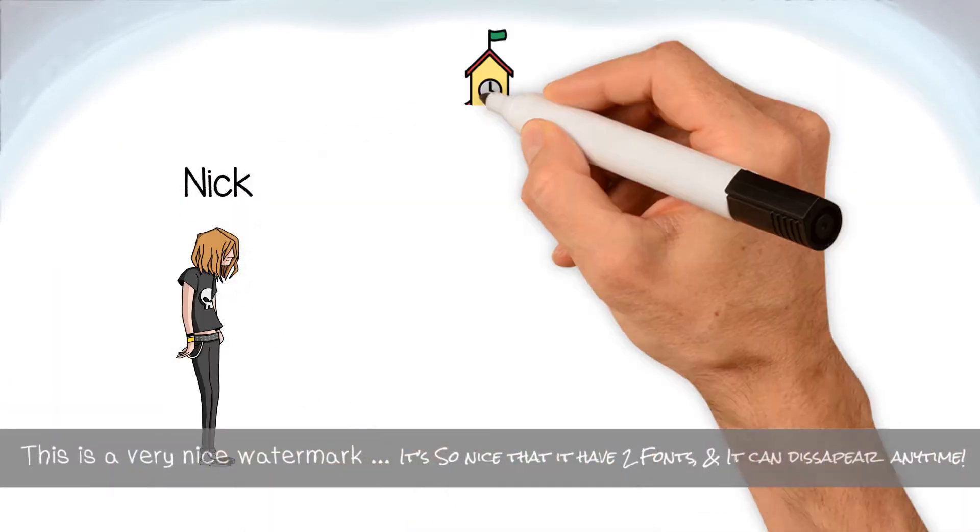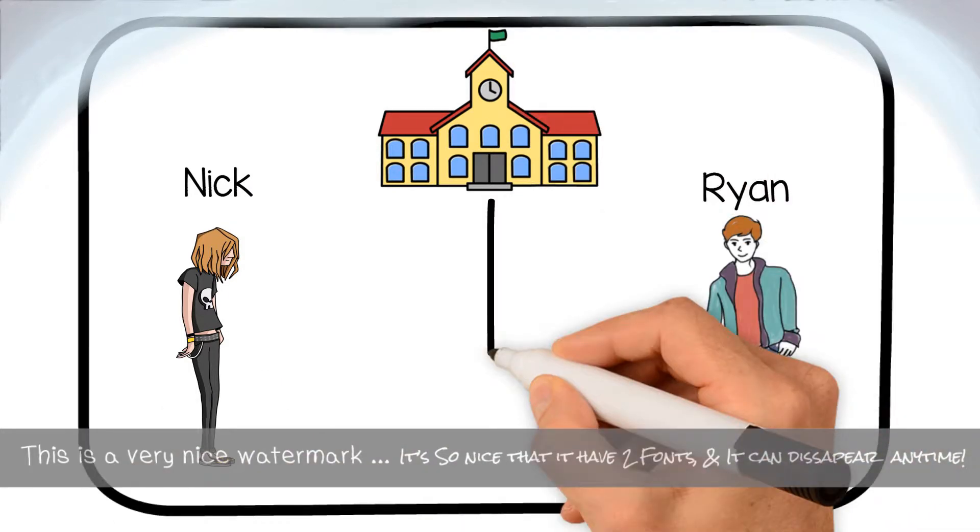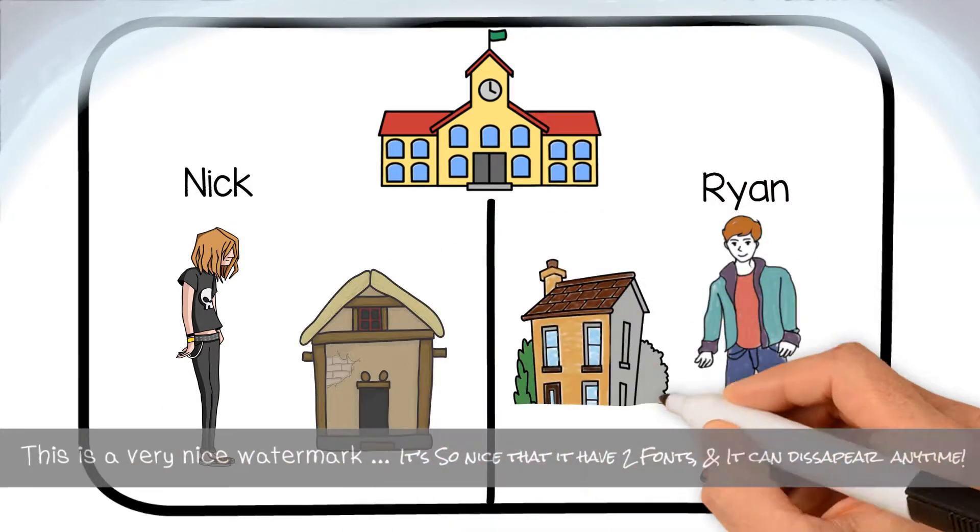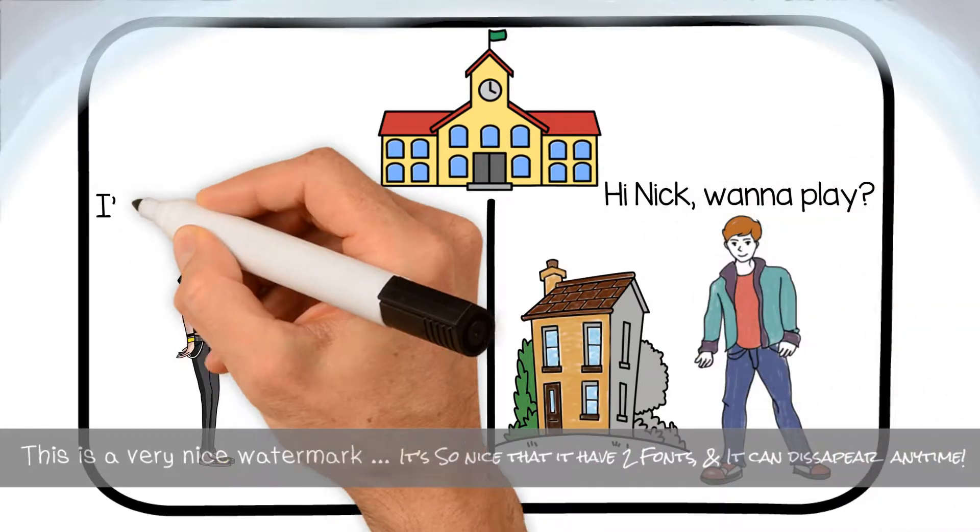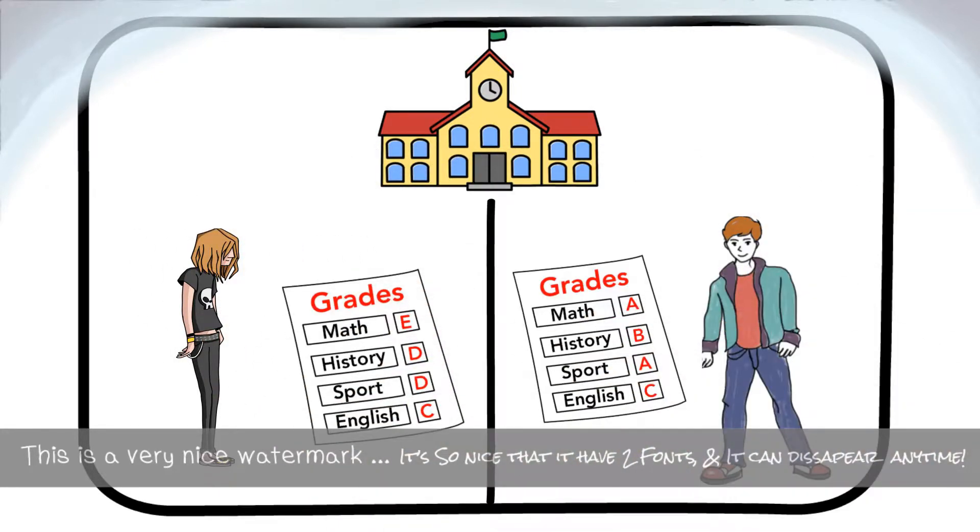Nick grew up in the same school district boundaries as Ryan, but under very different circumstances. They knew each other, but never played together as young kids, and went very different directions in middle school.